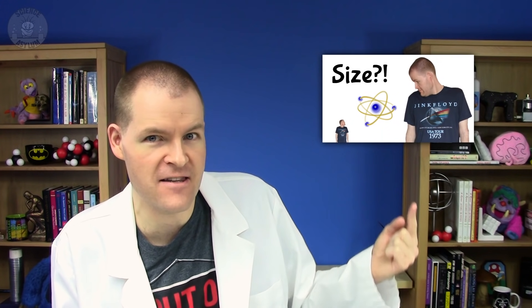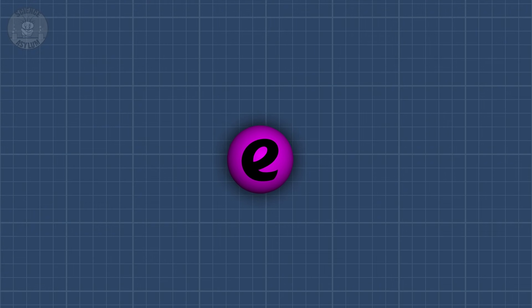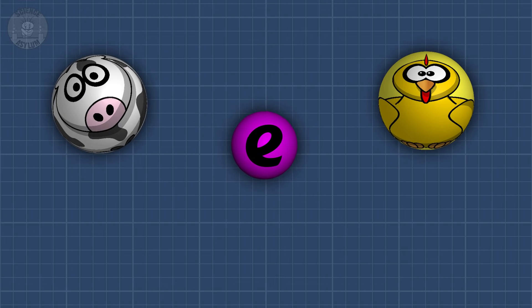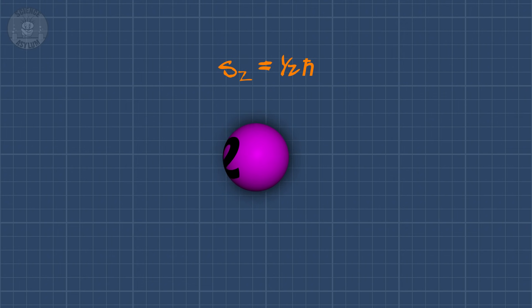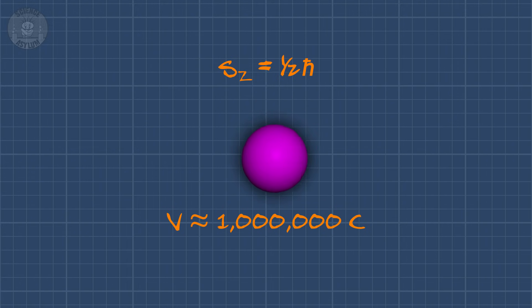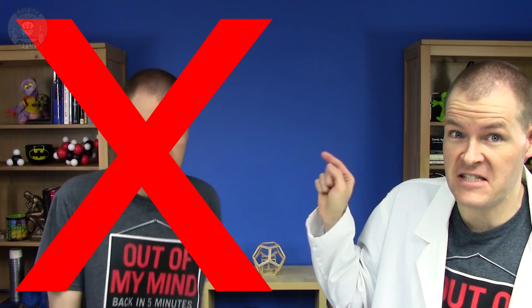Particles like electrons can't possibly be spinning. The upper limit on the size of the electron is 10 to the negative 18 meters, the smallest distance we've ever measured. If electrons are solid spheres with a diameter of 10 to the negative 18 meters, to have an angular momentum of one-half h-bar, the outer edge would have to be moving at almost a million times the speed of light. The smaller the electron is, the faster it would have to be spinning. The only possible conclusion? It's not spinning.